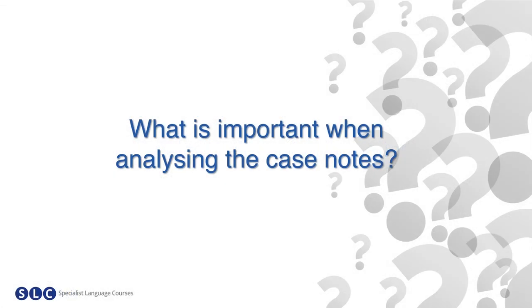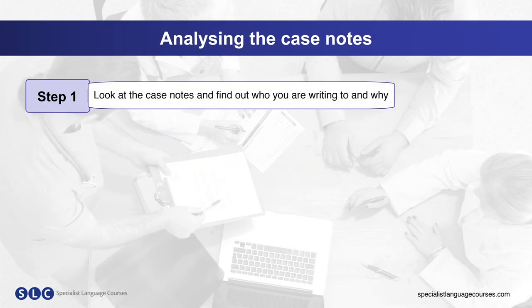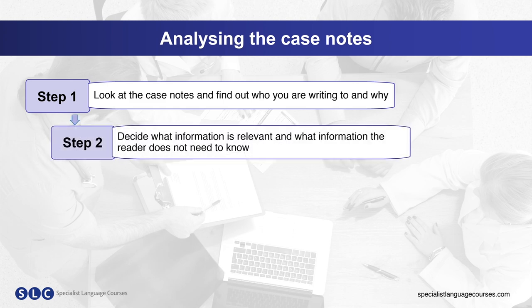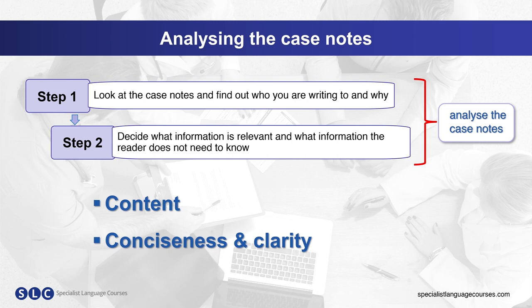There are several steps involved in writing an OET letter. Step one: read the case notes and find out who you are writing to and why. Step two: decide what information is relevant and what information the reader does not need to know. Analyse the case notes. These first steps will help you fulfil the content, conciseness, and clarity criteria.